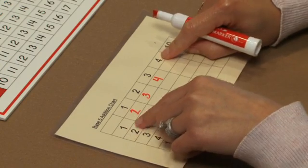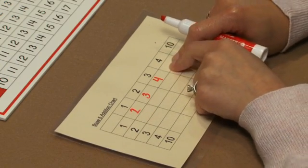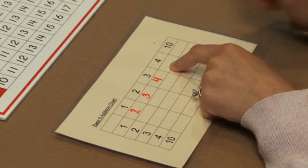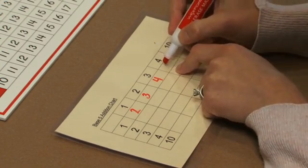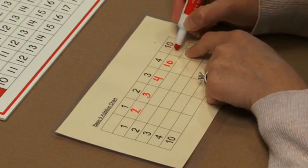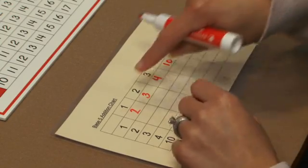4 plus 1, the students know that is base 5: 1, 0. We have 1, 0 plus 1, or base 5: 1, 1.